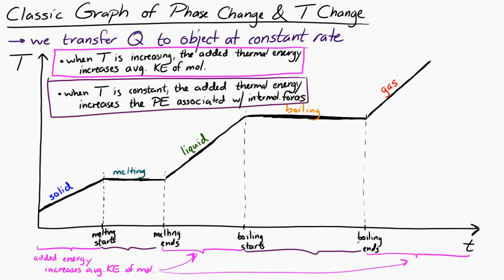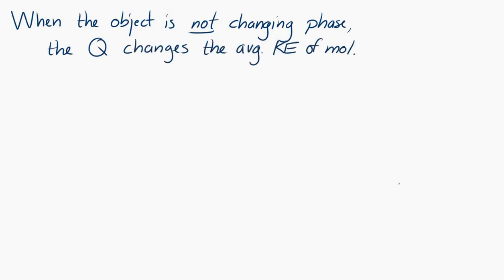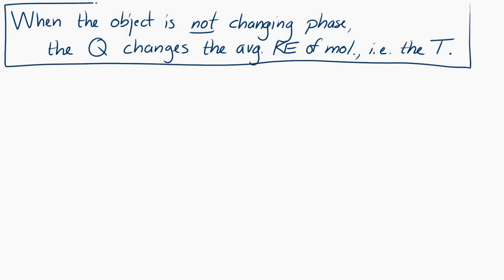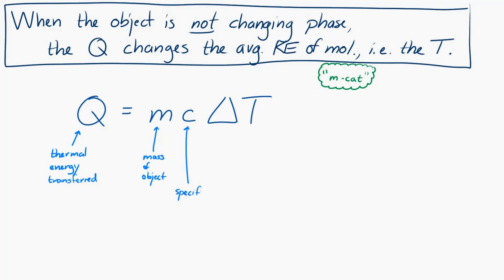In the regions where we're not changing phase — where we are completely a solid, liquid, or gas — when we add thermal energy, we're changing the average kinetic energy of the molecules and changing the temperature of the object. We have an equation to describe this: Q equals mcΔT. This is sometimes called the MCAT equation because it looks like MCAT. Q represents the thermal energy being transferred, m is the mass of the object, c is the specific heat capacity, and ΔT is the change in temperature of the object.